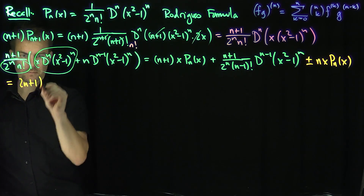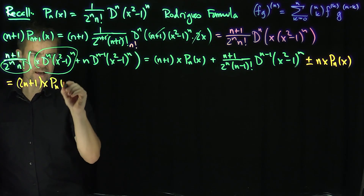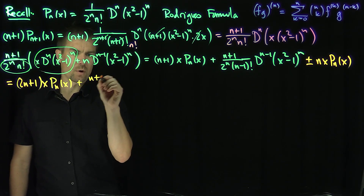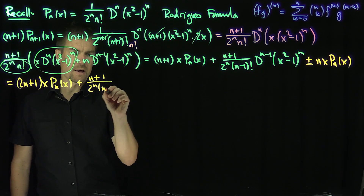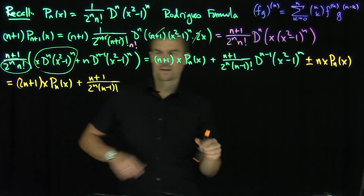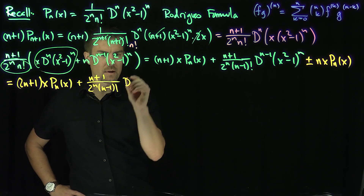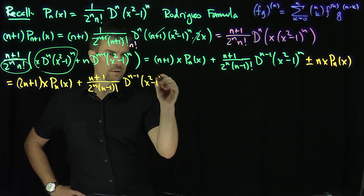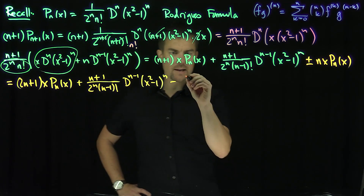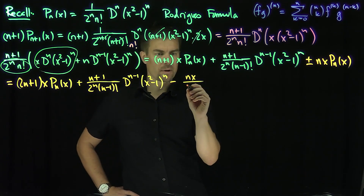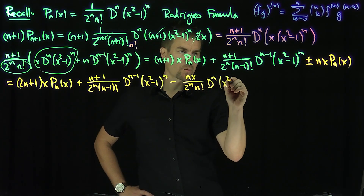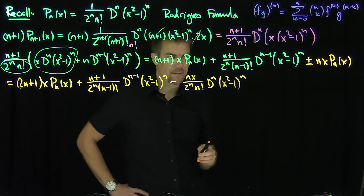So this becomes 2n+1 times x P_n(x), plus (n+1) over 2^n (n−1) factorial times d^{n-1} of x squared minus 1 to the n, minus n x over 2^n n factorial times d^n of x squared minus 1 to the n.